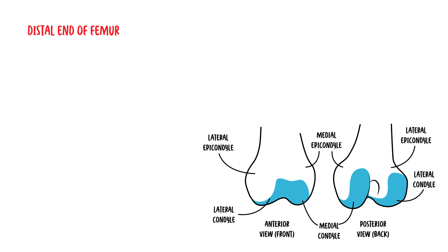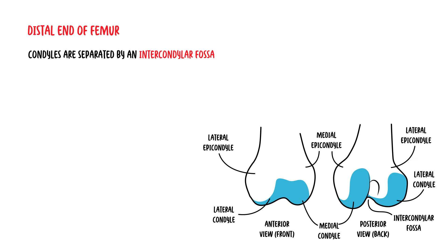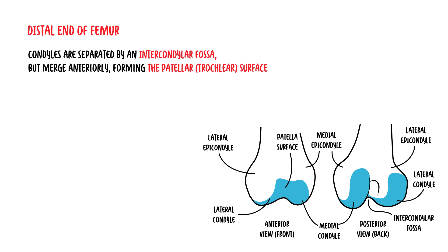The condyles are separated posteriorly and inferiorly by an intercondylar fossa, but merge anteriorly, forming a depression called the patellar surface when viewed from the front. This surface is what articulates with the patella bone.